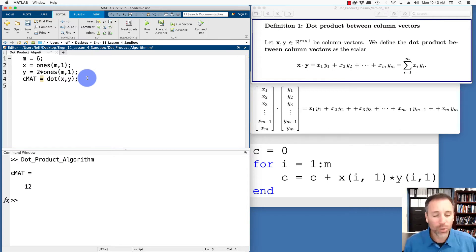All right, so now what we want to do is actually produce our own dot product, and we're going to use the dot product mechanism here. So the first thing we do is we say c equal to 0, and then we go for i goes from 1 to m.